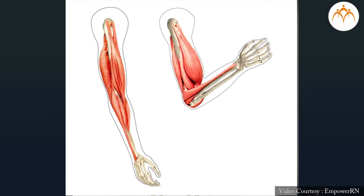When a signal is received from the brain, the protein filaments in the cytoplasm of all muscle fibers that are bundled together to form a muscle are pulled closer to each other, thereby decreasing their length. Simultaneously, all muscle fibers and hence the muscle itself undergo contraction, making movement possible.